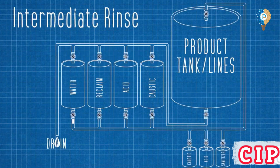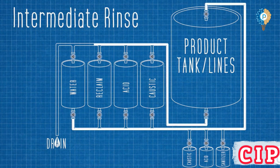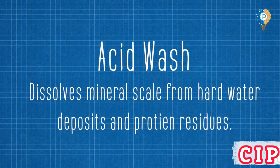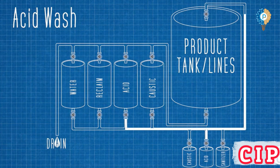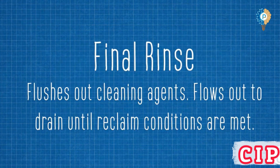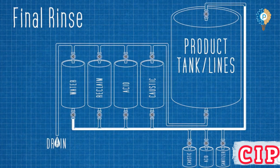Step 3: Intermediate rinse. Removes detergent residues with water. Step 4: Final rinse. Use purified water or WFI to ensure no detergent remains.